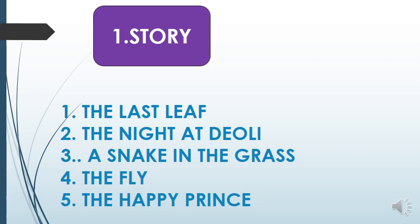The second story is about the traveling from Dehra to Devli. These are two cities in Uttarakhand. So there is a train journey story set in those places. This story helps us understand relationships and communication that you can maintain.